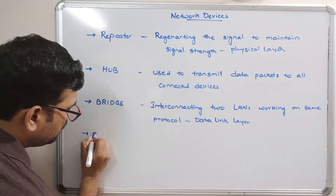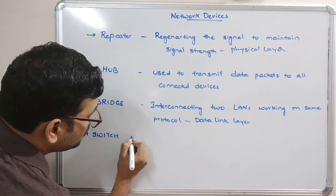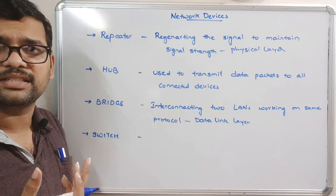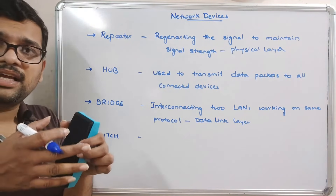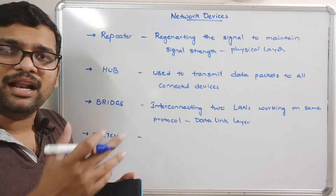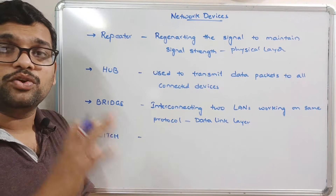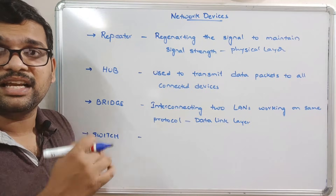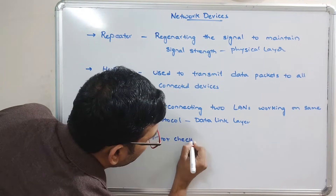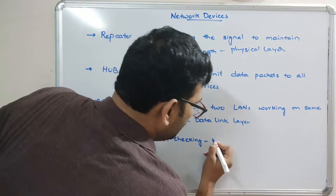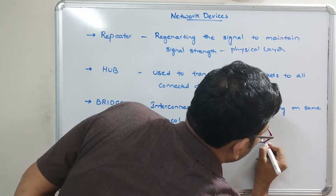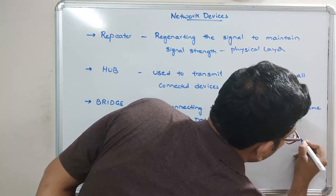The next device is the switch. The switch is similar to the hub but with additional functionality. The switch sends only good data packets to the correct ports. If packets contain errors, those packets are automatically ignored by the switch — so error checking is done here.